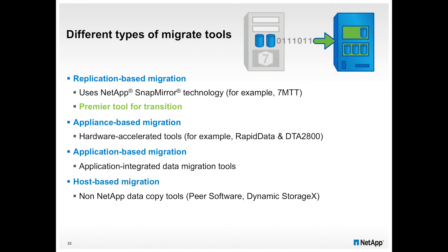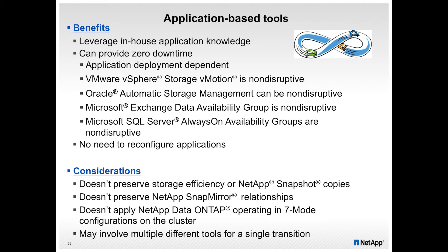Application tools provide zero downtime. VMware customers are some of the easiest to migrate — we put the new system in and Storage vMotion makes migrations to Cluster Data ONTAP very easy. That way we deal with architecture and training challenges, not migration challenges. Very similar approaches apply with Oracle, DAG availability groups with SQL and Exchange. One thing to note: they don't preserve snapshot copies, however we can turn deduplication and snapshots on and let those build over time during the migration.